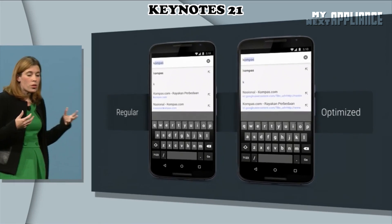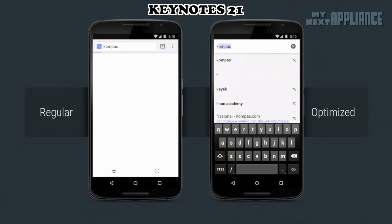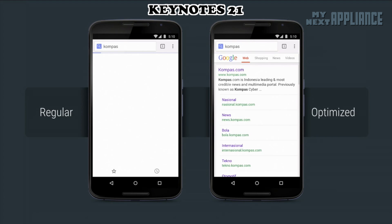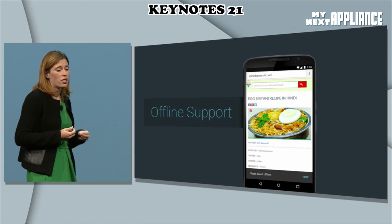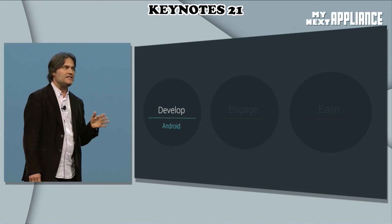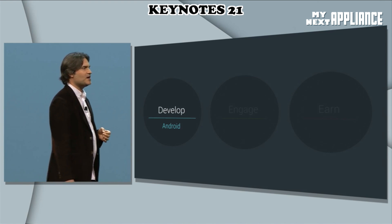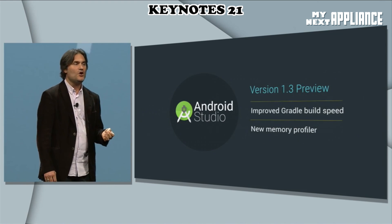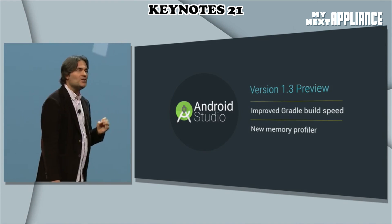Connectivity can be a real challenge. Last October, we launched a streamlined version of our search results page — it's 10 times smaller and 30% faster. We're working hard to support offline capabilities. Today we're sharing a preview of Android Studio version 1.3 with significant enhancements.